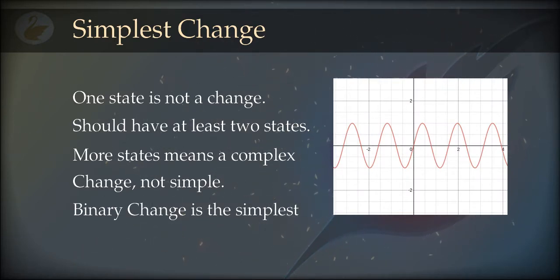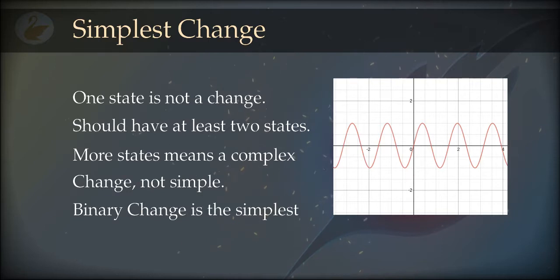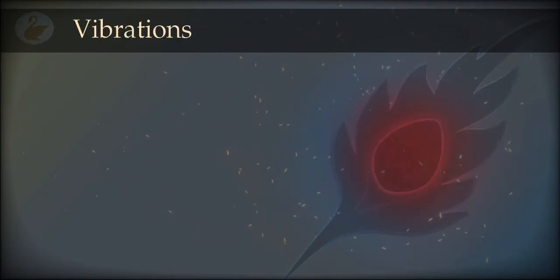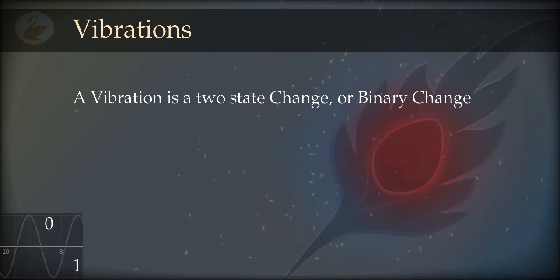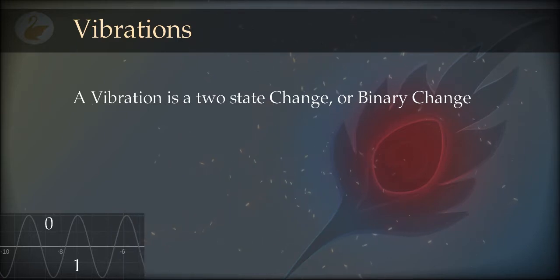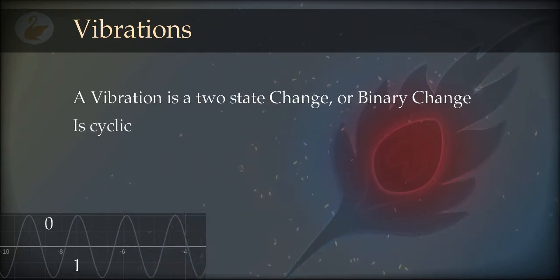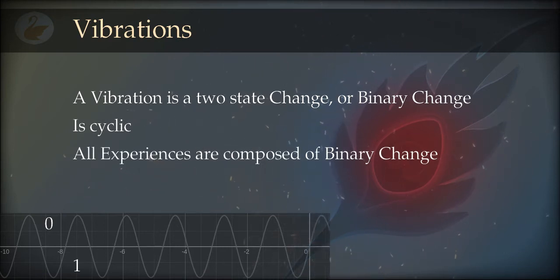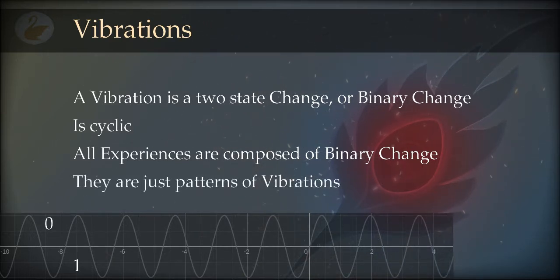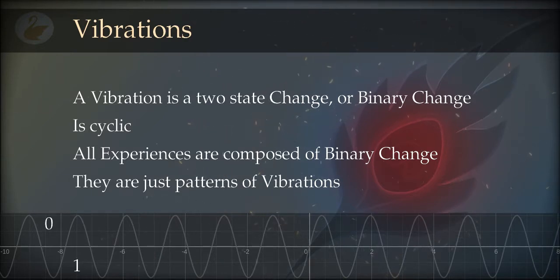The binary change is the simplest possible change — there is nothing simpler. We are going to name it: it can be called a wave or a vibration. When we look at waves or vibrations in our day-to-day experience we see something similar — a two-state change. The word vibration defines a change which is cyclic, continues, and has at least two states. This vibration is the basis of all experiences. All experiences are just combinations of binary change — permutations and combinations of one single vibration which is binary in nature.